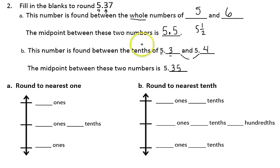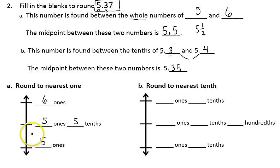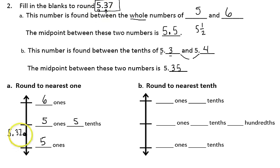Let's use all of these numbers to help us with our rounding on the vertical number line. We'll start by rounding the number to the nearest one. Our original number, 5 and 37 hundredths, falls between 5 ones and 6 ones. The midpoint would be 5 ones and 5 tenths. The number has 5 ones and 3 tenths and 7 hundredths. The 3 tenths falls below the midpoint of 5 ones and 5 tenths. Since the number falls below the midpoint, it rounds down to 5 ones. Rounded to the nearest one, the number equals 5.